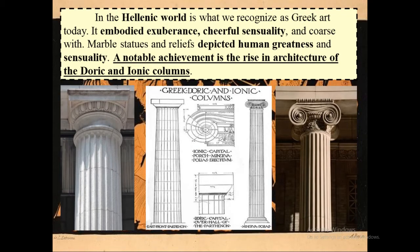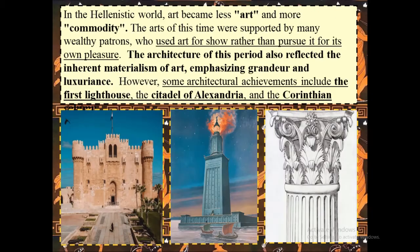The Hellenic world is what we recognize as Greek art today. It embodied exuberance, cheerful sensuality, with marble statues and reliefs depicting human greatness. A notable achievement is the rise of the architecture of the Doric and Ionic columns. In the Hellenistic world, art became less art and more commodity, supported by wealthy patrons who used art for show. The architecture of this period also reflected materialism, emphasizing grandeur and luxuriance. Architectural achievements include the first lighthouse, the Citadel of Alexandria, and the Corinthian column.